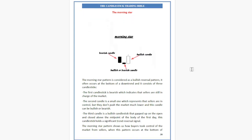The Morning Star pattern is considered a bullish reversal pattern. It often occurs at the bottom of a downtrend and consists of three candlesticks. The first candlestick is bearish, indicating that sellers are still in charge. The second candlestick is a small one, representing that sellers are in control but not pushing the market much lower — the candle can be bullish or bearish.